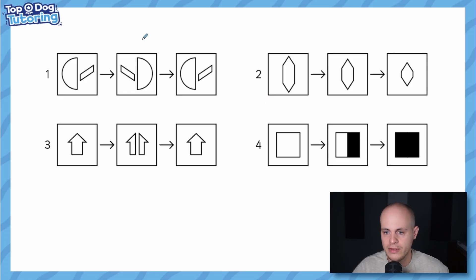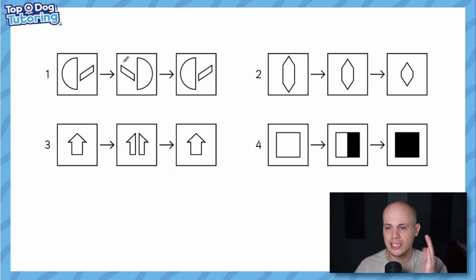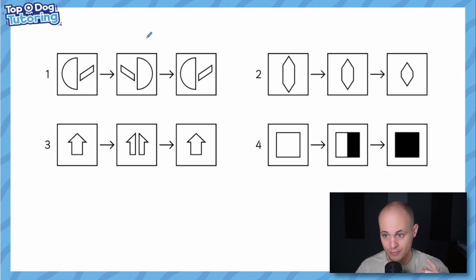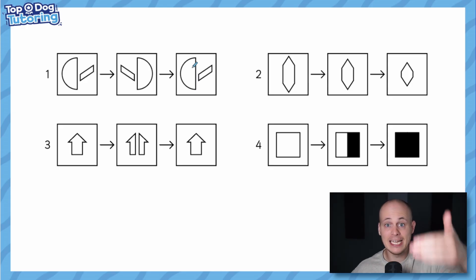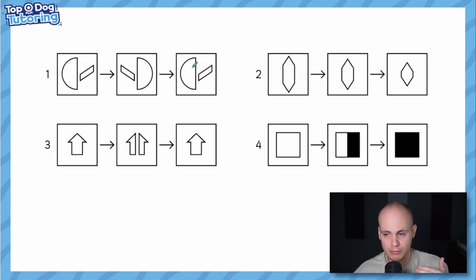Let's dive into operation number one. This operation transforms the shape by flipping it — it's a mirror image, a reflection, not a rotation. If you apply operation one again, it flips back to its original state. So this is the first type of operation: something changes, and then changes back again if applied once more.